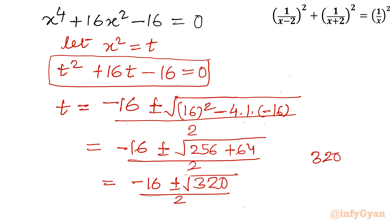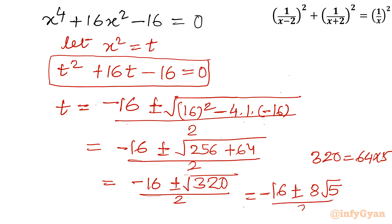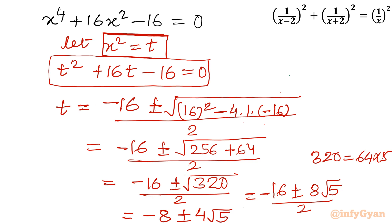Finding the factors of 320: 320 equals 64 times 5, and the square root of 64 is 8. So we can write this as minus 16 plus or minus 8 root 5, divided by 2. Dividing numerator and denominator by 2, we get t equals minus 8 plus or minus 4 root 5. This is our t value.